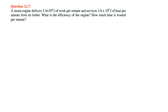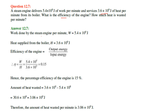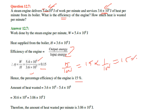A steam engine delivers a given amount of work per minute and receives a given amount of heat per minute from its boiler. The efficiency eta equals W divided by H. Using the given values, the result is 0.15, which equals 15%. The amount of heat wasted per minute is the difference between heat supplied and work done, which comes out to 3.06 × 10⁹ Joules per minute.